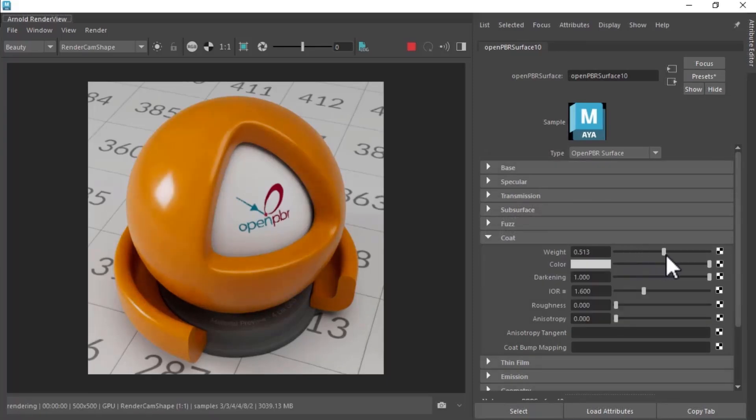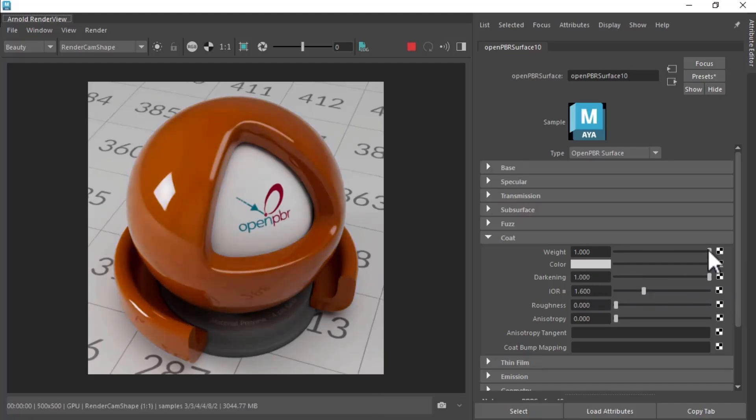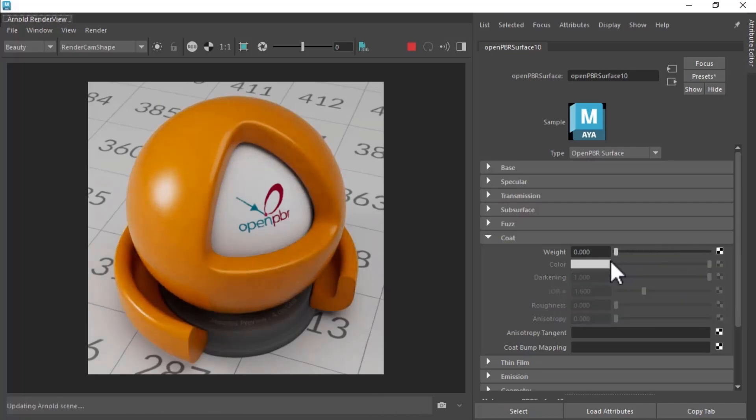You may have noticed that adding the coat appears to darken the base. This is physically correct and happens due to light bouncing inside the coat and losing energy. Sometimes this effect is not wanted though. The coat darkening control is provided to turn off the effect.